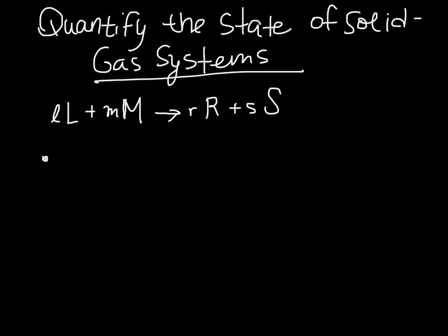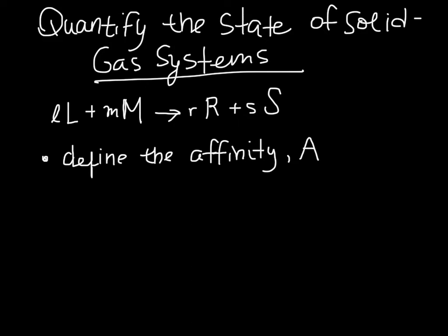We are going to define something called the affinity for this reaction, and we're going to label it with capital A. We define the affinity as the chemical potential of the products minus the chemical potential of the reactants. This essentially tells us something about the likelihood of this reaction happening.